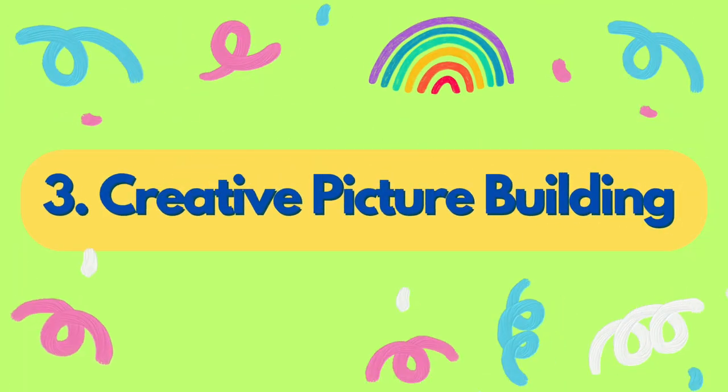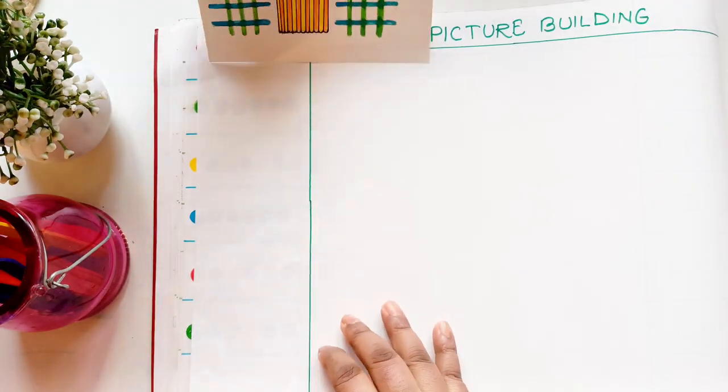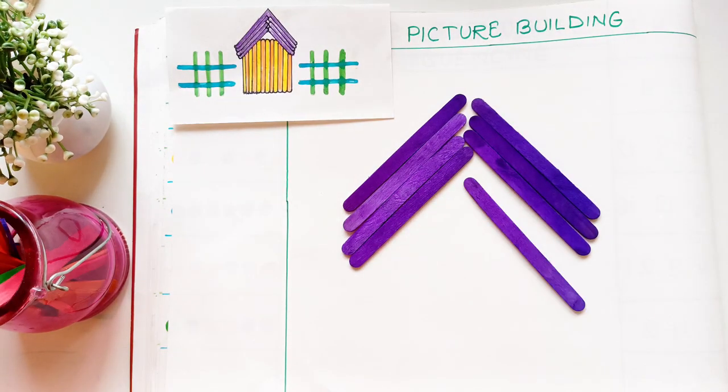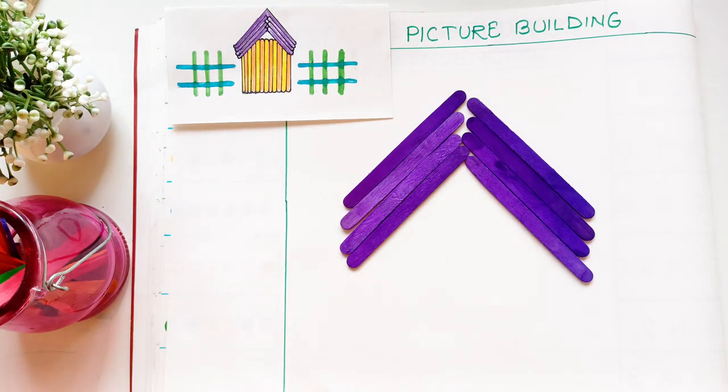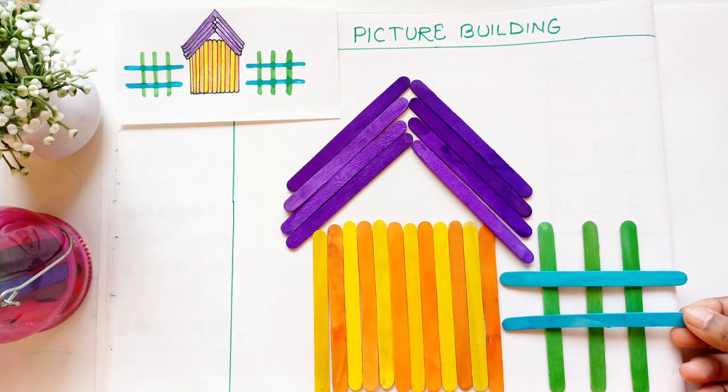Our next activity is creative picture building. Here I have drawn a sample image to create a picture of a house, but I suggest you let your child create fun images. Here they can make a house, rainbow, or even a tree. You will be amazed at what they can come up with their own ideas and imagination. The creativity of a child can bloom.